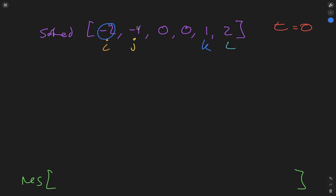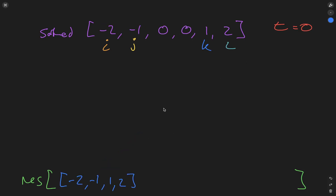k is still less than l and we have minus two, minus one, one, and two — equal to the target. We push these values into the result array. But here's the catch: if we move k forward and l back after finding a solution, we might land on the exact same values again. Since quadruplets need to be unique, we check if the next value of k equals the current k and skip it, and likewise decrement l by two if needed to avoid duplicates.